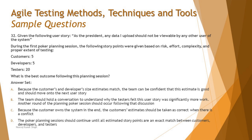A rule should be made that the highest estimation or average of all three estimates is taken, with a maximum of two to three rounds. You don't continue endlessly. If you don't reach a conclusion in three rounds, stop, take the average or maximum, and move on to the next story. The right answer for question 32 is B: the team should hold a conversation to understand why the tester felt the story was significantly more work, and another round of planning poker should occur after that discussion.